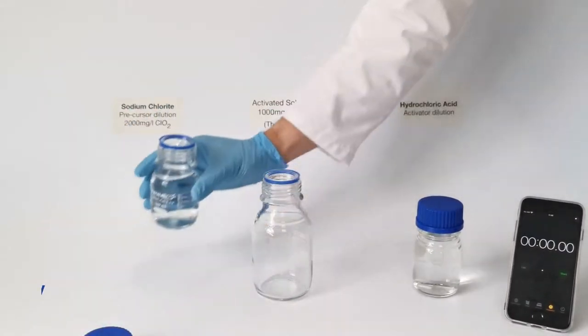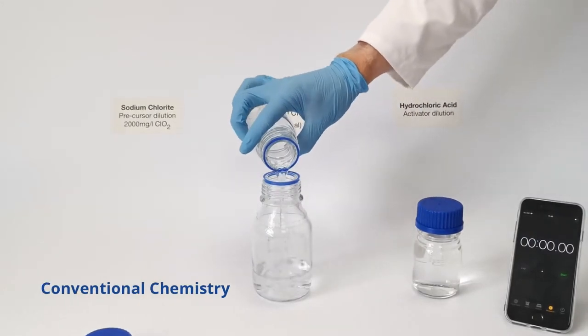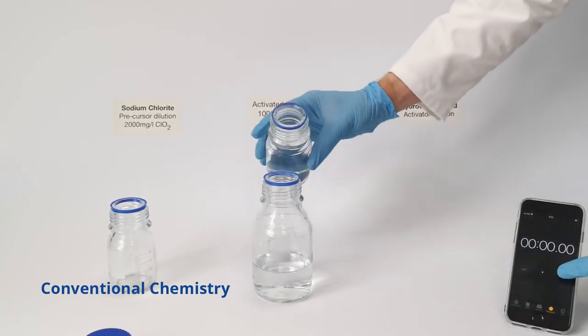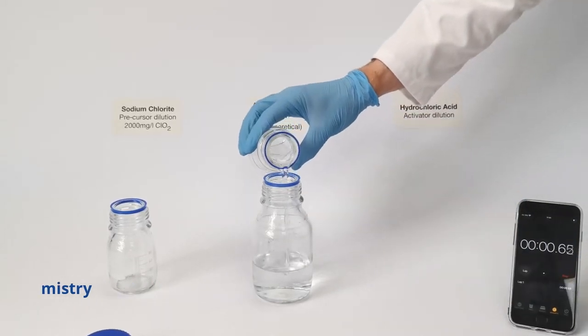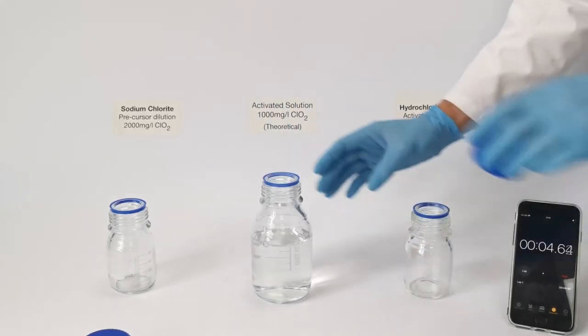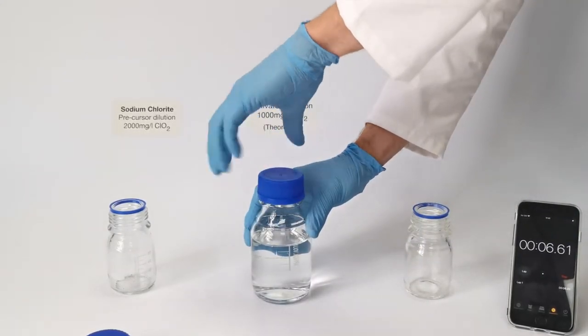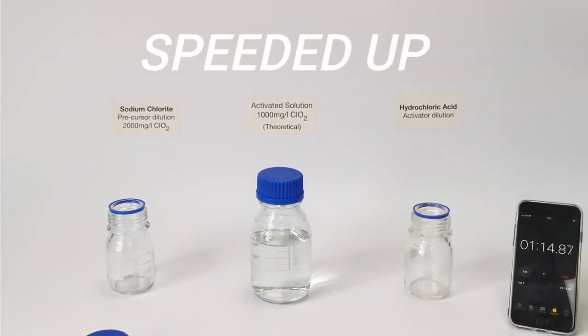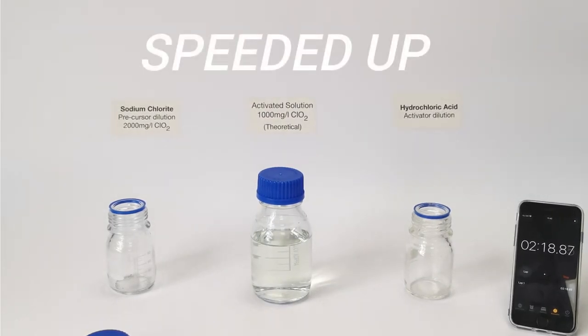Let's look at conventional chlorine dioxide precursors sodium chloride and hydrochloric acid. Here you can see the reaction is not instant. In fact, it will take an hour or more to reach its full yield with a much lower conversion rate than Activox. A lower conversion also means higher by-products. This slow reaction is the reason a more complicated dosing system is required.